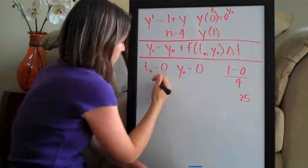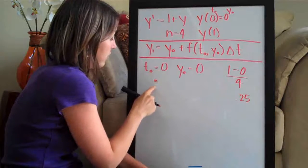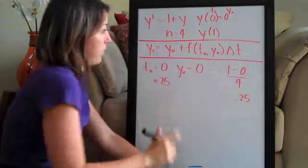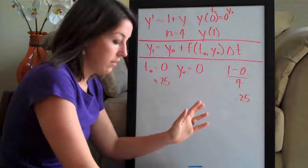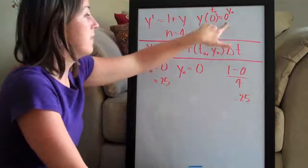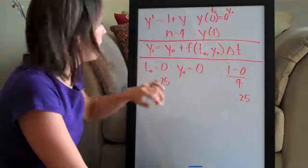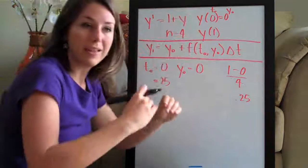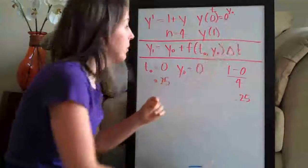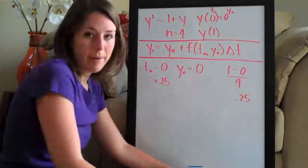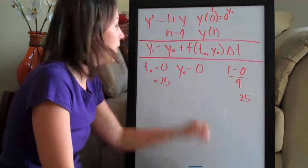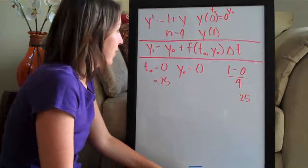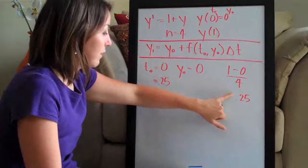It's also going to be the change in t every time that we move one step over. Basically Euler's method is a method of approximation. They give you one point on the function and you use Euler's method to approximate another point by stepping closer and closer to it. You can do the same thing by just solving the equation algebraically and plugging in the point that you're looking for, but we have to learn this approximation method.